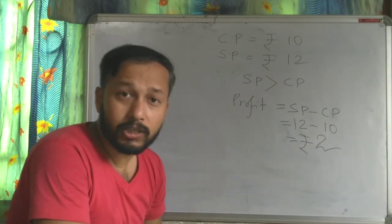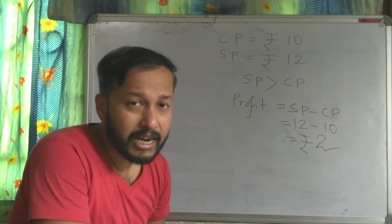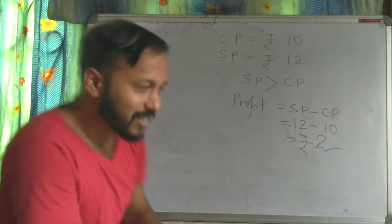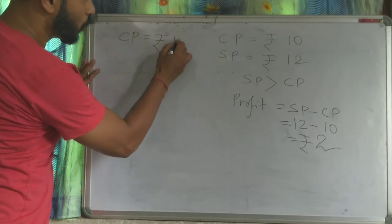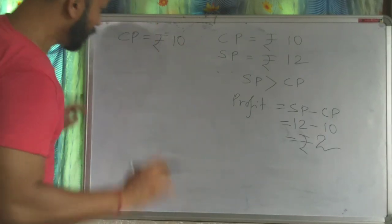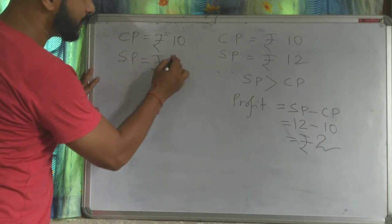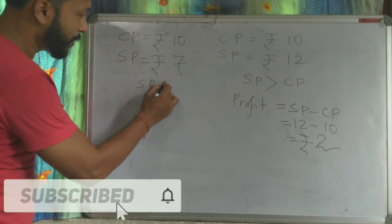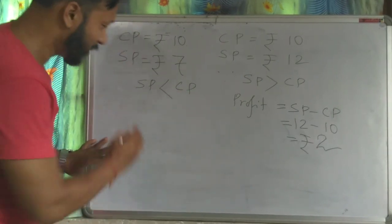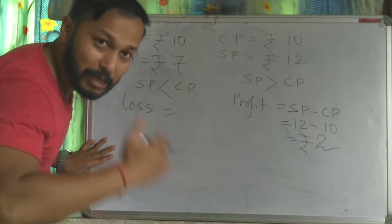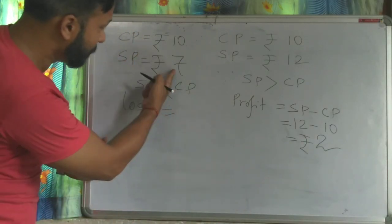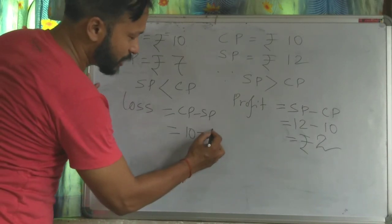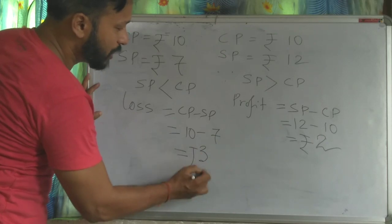Another question: the pen you bought was for rupees 10, so your cost price is rupees 10. Now you are selling the same pen to me for rupees 7. Selling price is less than cost price, so it's a loss. How much loss? Loss equals CP minus SP, because CP is greater. CP minus SP: 10 minus 7 equals rupees 3 loss.